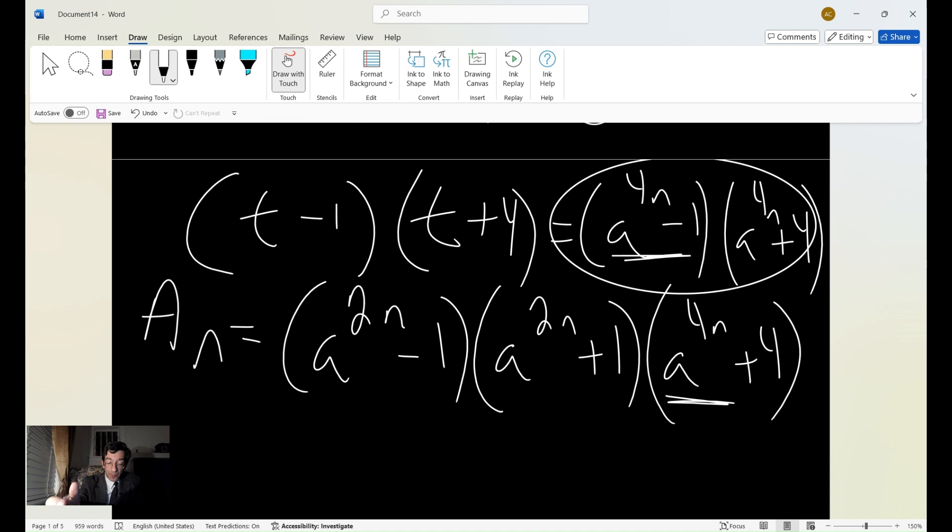So that means it's also divisible by 4. And if I add 4, if I add a^(4n) + 4, it's still going to be divisible by 4. So the first half of this job is done.